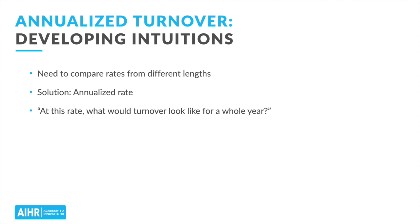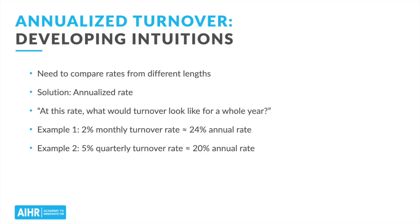By converting it to an annual rate, we can compare turnover rates calculated from different time periods. So, to continue with our example, how does a 2% monthly turnover rate in October compare with last year's annual rate of 4%? Well, suppose I lost 2% of my people every single month for a year. 2% times 12 months would be an annualized rate of 24%. Comparing that annualized rate with last year's annual rate of 4%, we can see that's a pretty incredible increase. As another example, if I have a 5% turnover rate for the first quarter of the year, this works out to an annualized rate of 20% per year — 5% per quarter for 4 quarters gives me 20% for the whole year. But as simple as this is, it has real value because it lets us assess and compare values covering different time periods.